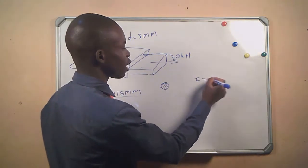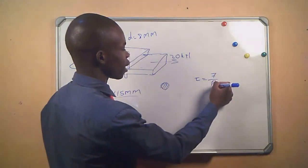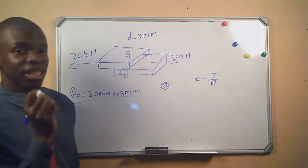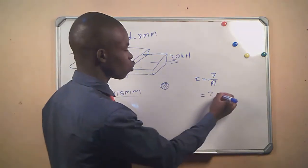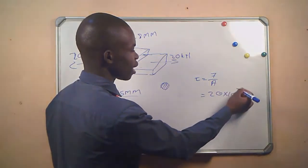We know that shear stress equals force divided by area. Since we are calculating the shear stress of the pin, we will focus on the area of the pin. We know the force is 20 times 10 to the power 3.